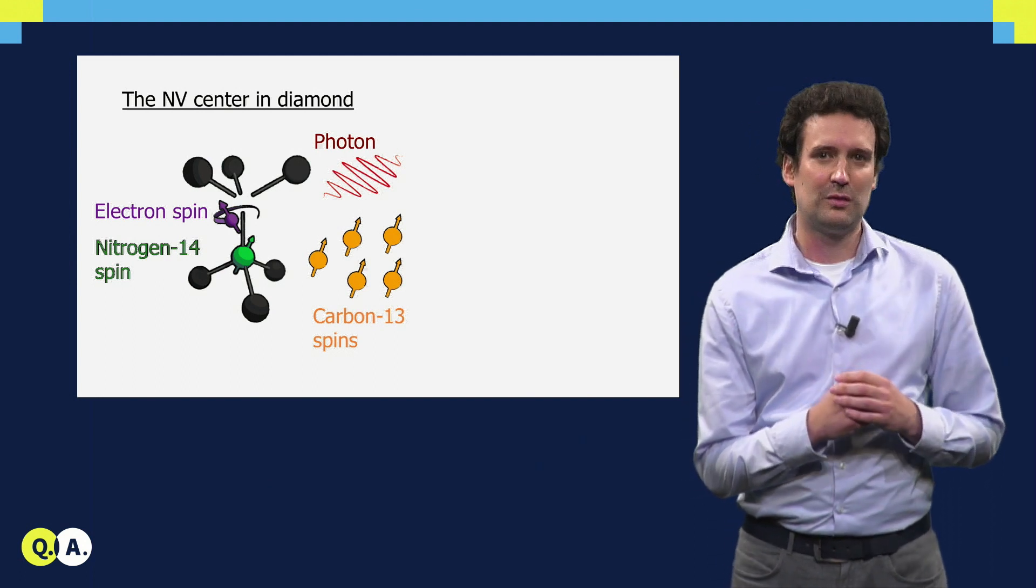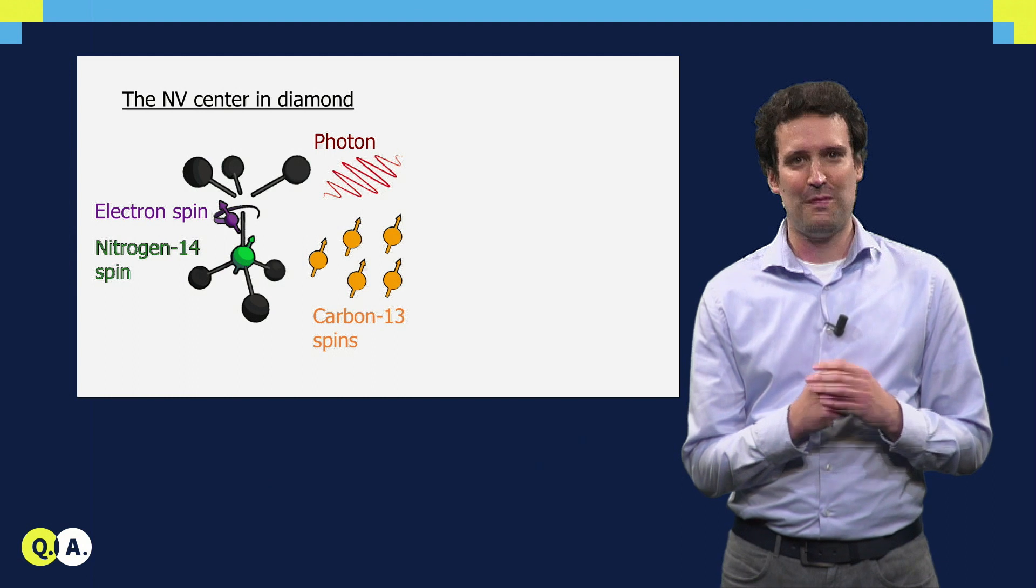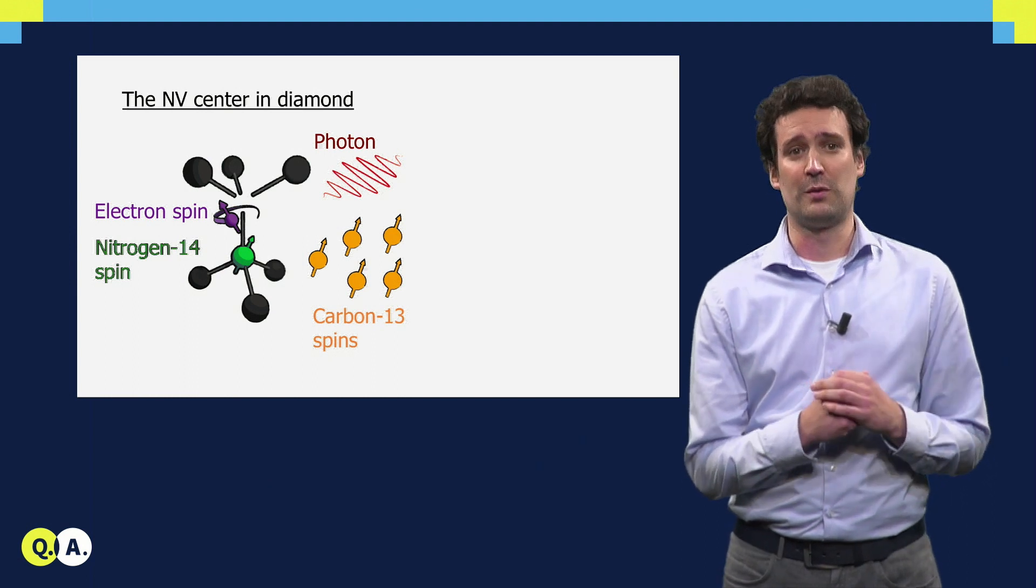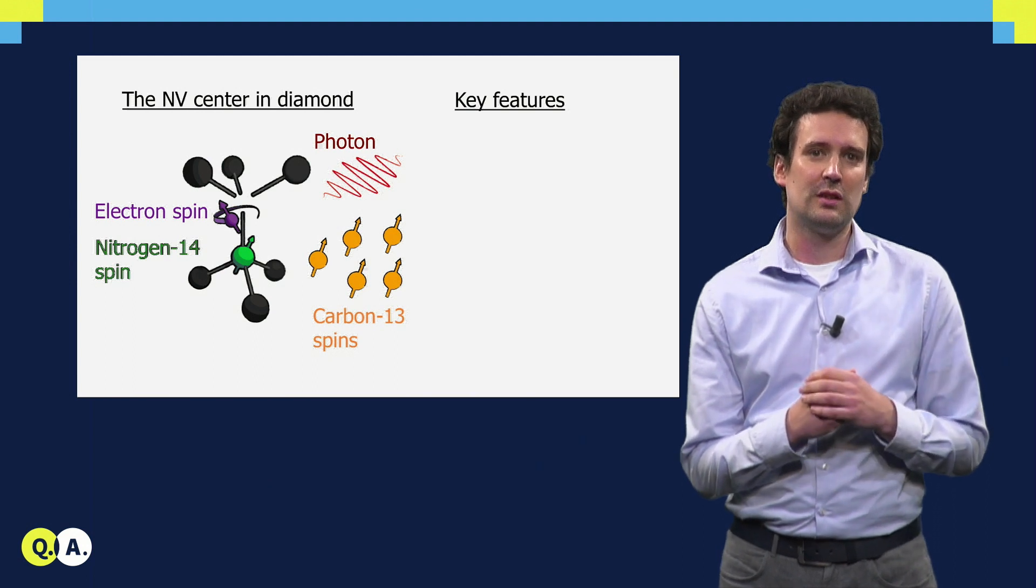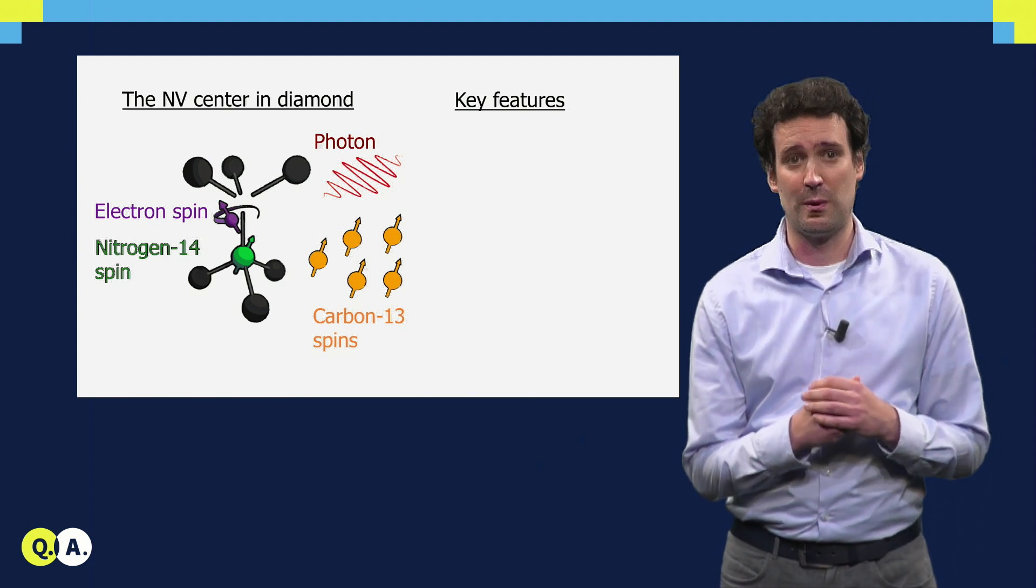At this vacancy, some electrons are trapped that form an electron spin that we can use as a quantum bit. These NV centers have several unique features that make them very promising for quantum information systems.